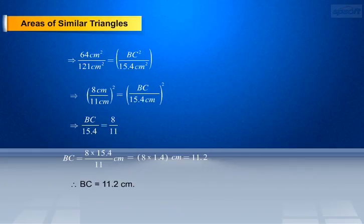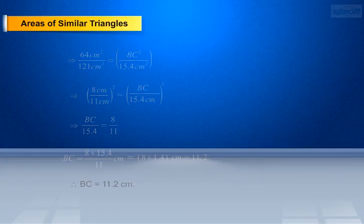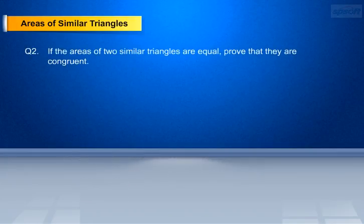Therefore, BC equals 11.2 cm. Question 2: If the areas of two similar triangles are equal, prove that they are congruent.